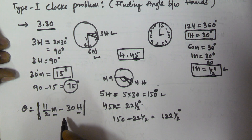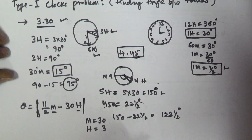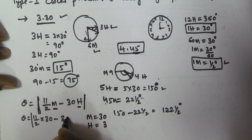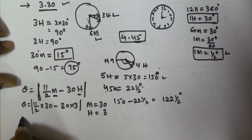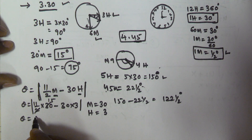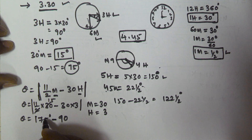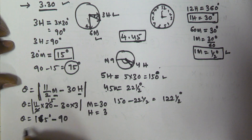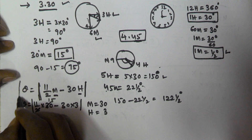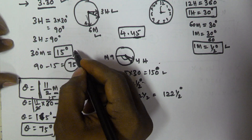Here m is minutes and h is hours. Let's take the problem of 3 hours 30 minutes. In this case, minutes equals 30 and hours equals 3. Substituting: theta equals the absolute value of (11/2 times 30) minus (30 times 3), which equals 165 minus 90, giving us 75 degrees. So we get 75 degrees, which matches our earlier answer.